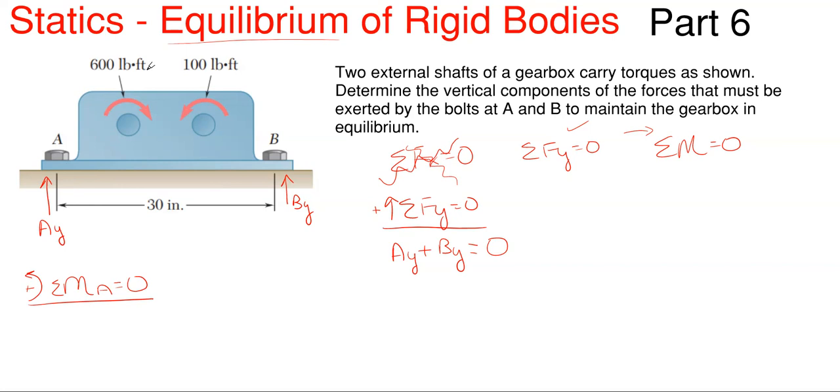So pretty simplistic moment equation here. You just got to watch out for one thing. We have our 600 pound-feet of rotation, which is clockwise. So that's negative 600 pound-feet of rotation. And then I have 100 pound-feet of rotation going counterclockwise. So that's plus 100 pound-feet of moment. And then I have B sub y, which I assumed upward, so it is also rotating counterclockwise. And then I need a distance for that.